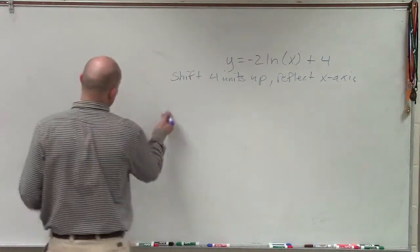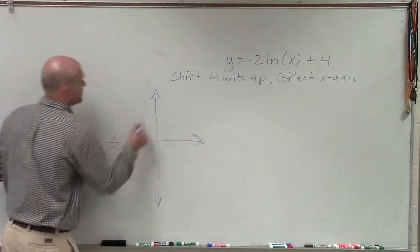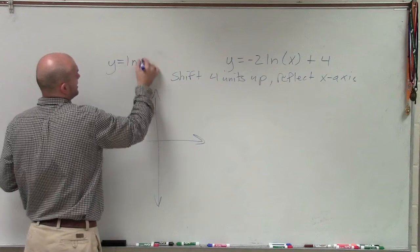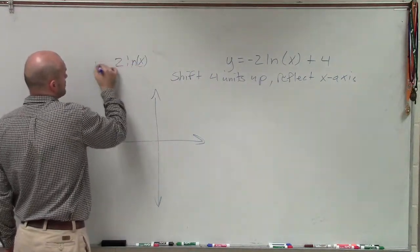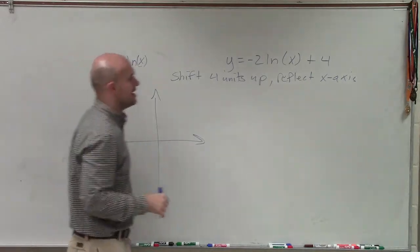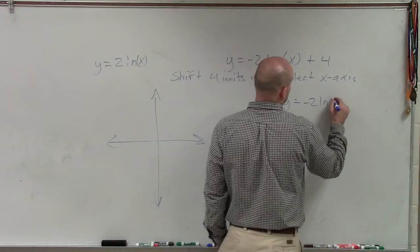Now what we need to do is graph our parent function. The parent function with no transformations is, I'm sorry, y equals 2 ln of x. And then we are going to graph our final function with the transformations.